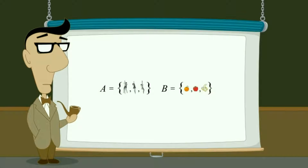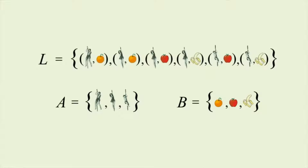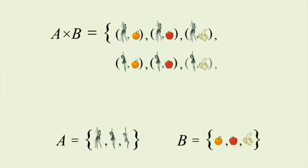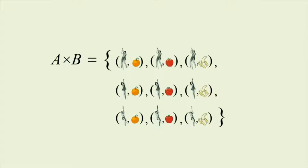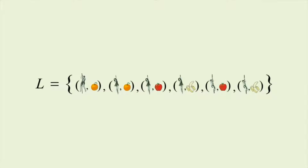You may recall that the Cartesian product of two sets is also a set of ordered pairs. Unlike relation L, the Cartesian product contains every possible ordered pair where the first element is a member of set A and the second element is a member of set B. The Cartesian product of sets A and B therefore contains all nine possible ordered pairs, as opposed to the six contained in relation L. Of course, everyone in set A could have liked every fruit in set B, in which case relation L would have been the same as the Cartesian product.